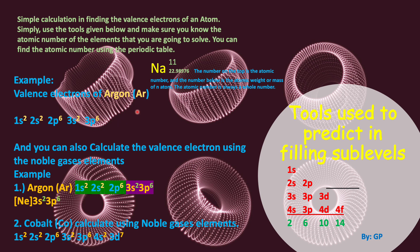Let's find the valence electrons of argon. We will use the sub-level tools: s, p, d, and f. In the s sub-level, we can use a maximum of two electrons. In the p sub-level, a maximum of six electrons. In the d sub-level, a maximum of ten electrons. In the f sub-level, a maximum of fourteen electrons.